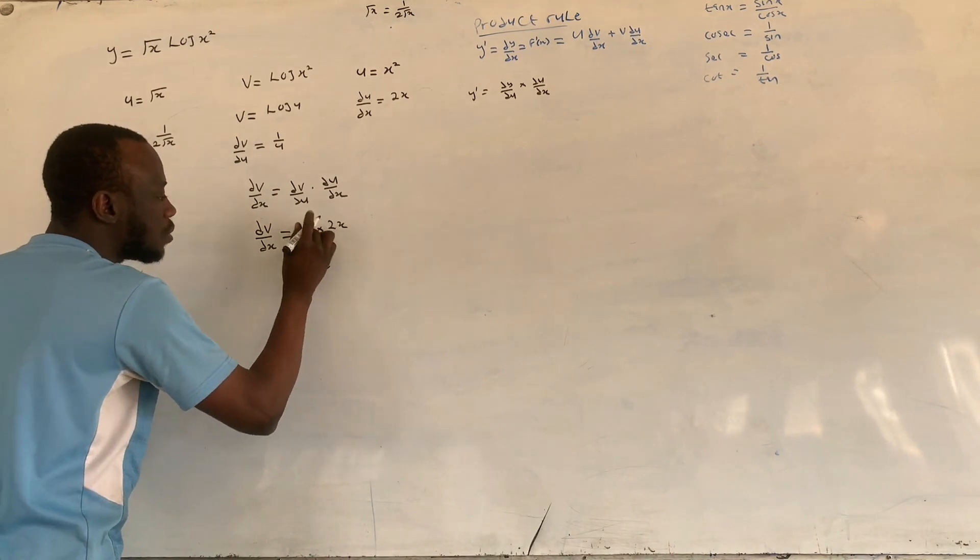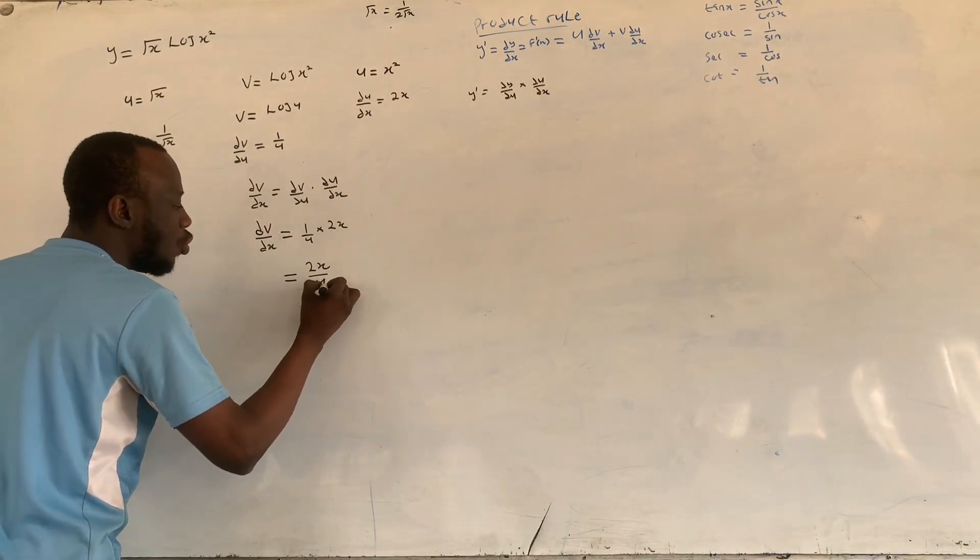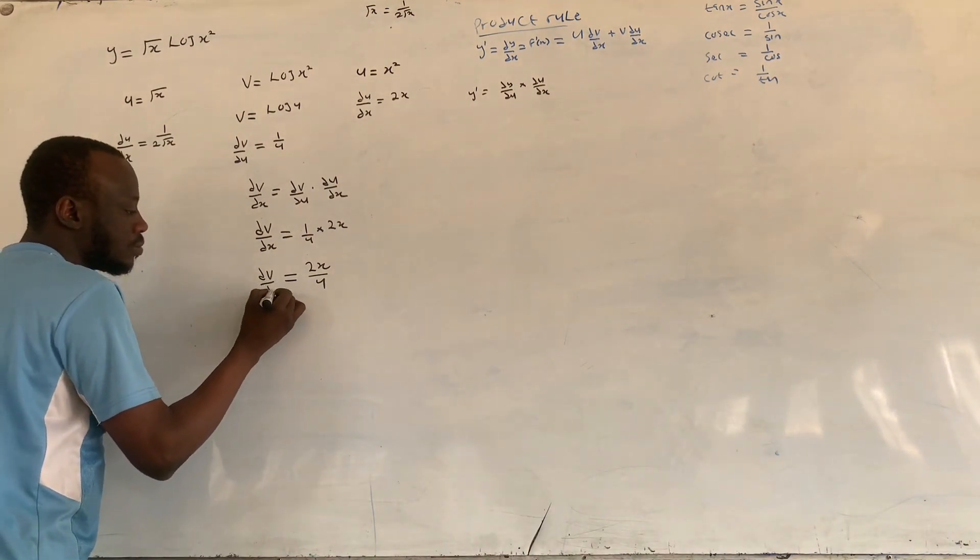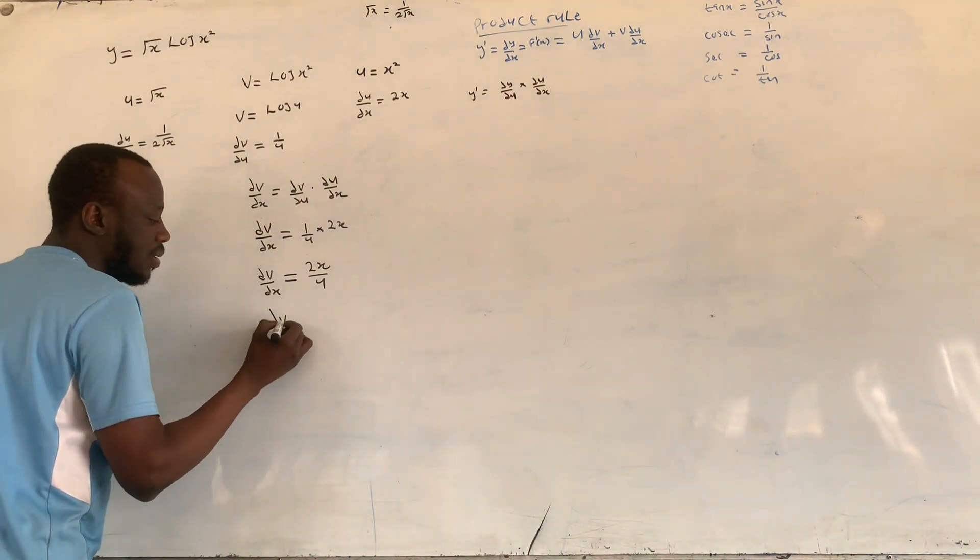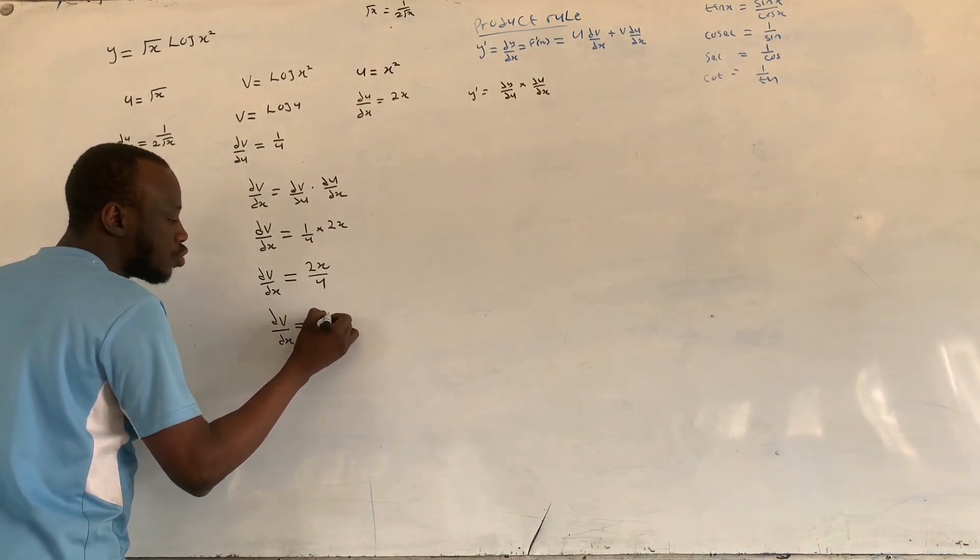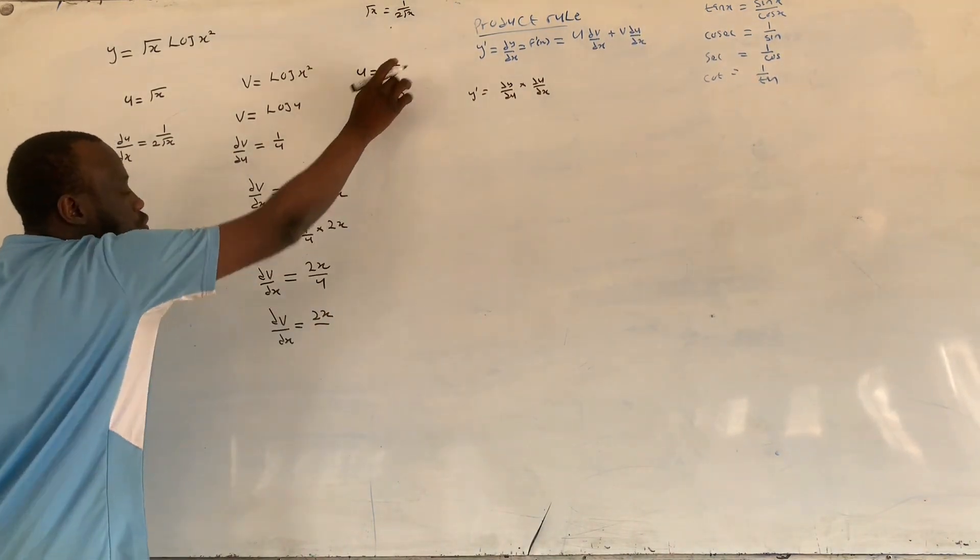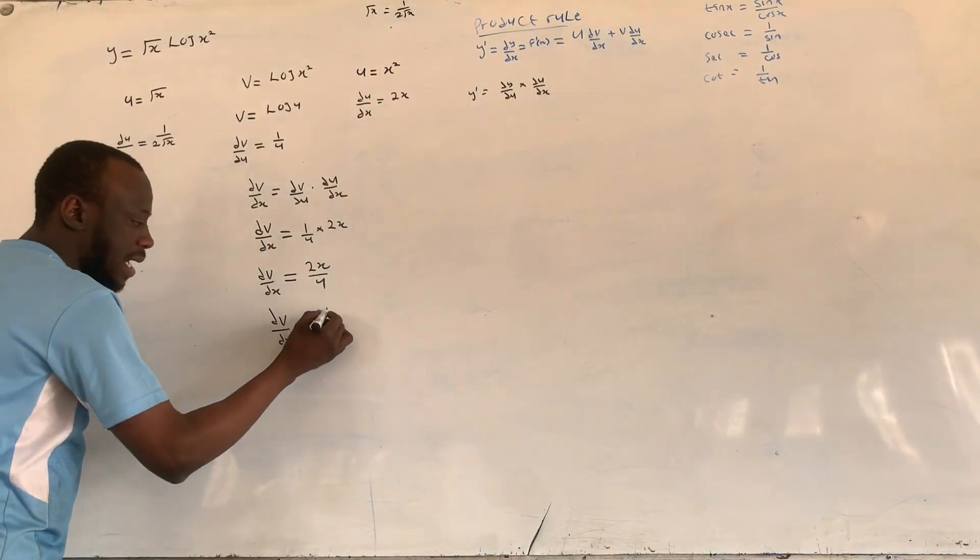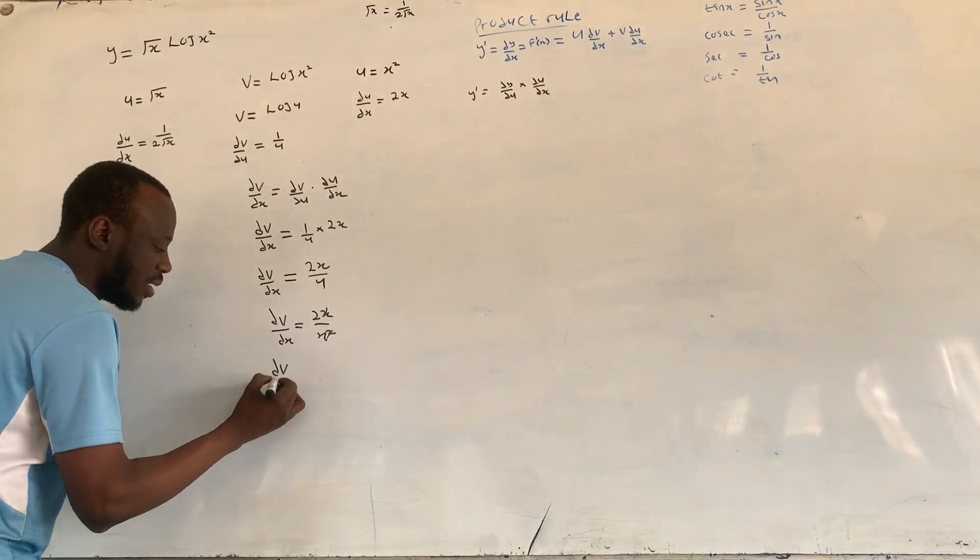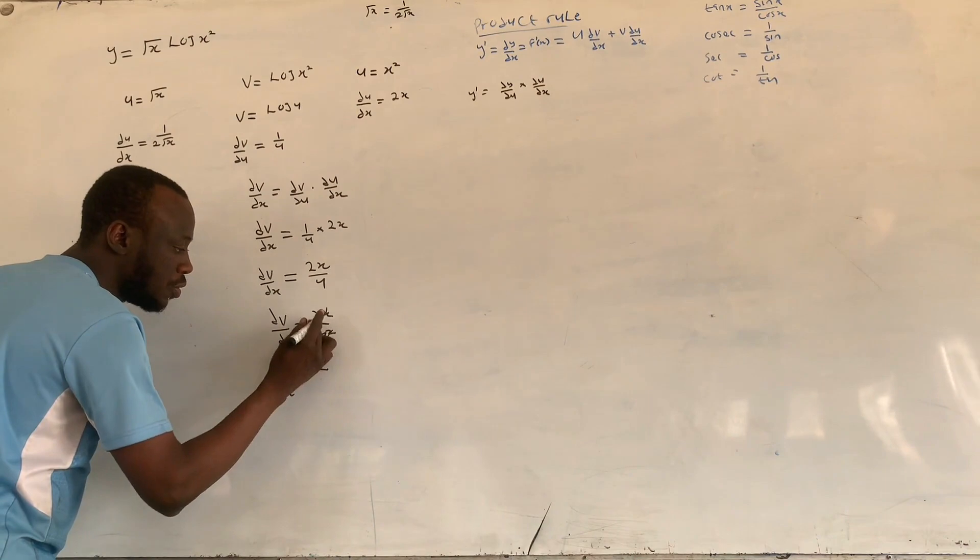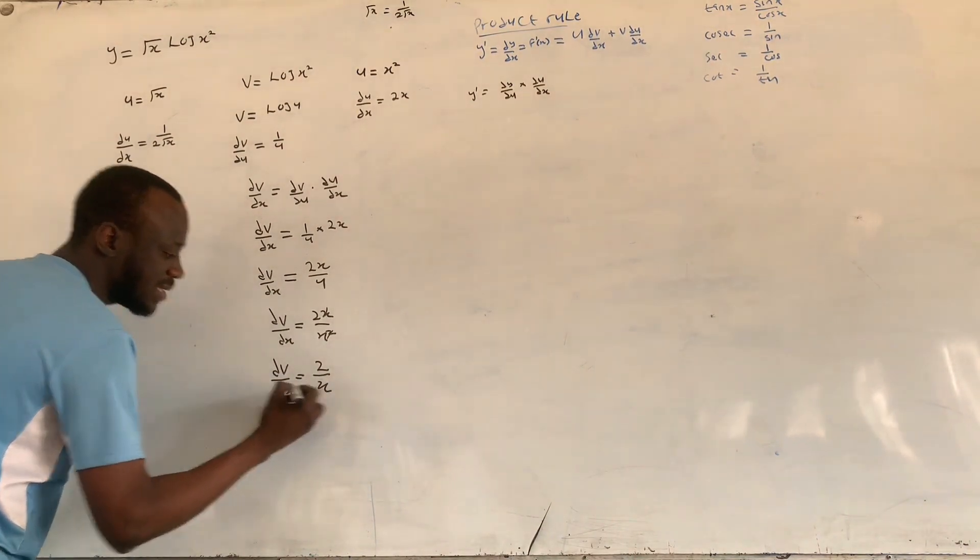Then dv over dx is equivalent to 2x, what is our u which is x squared. Here x cancels on x. Here we have dv over dx equals what? 2 over x.